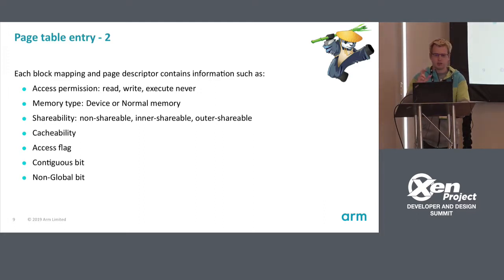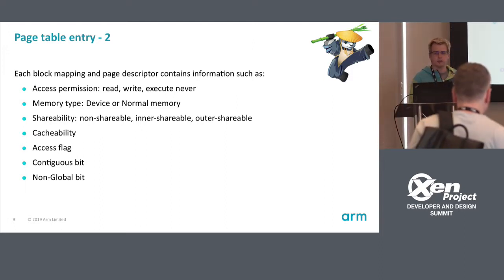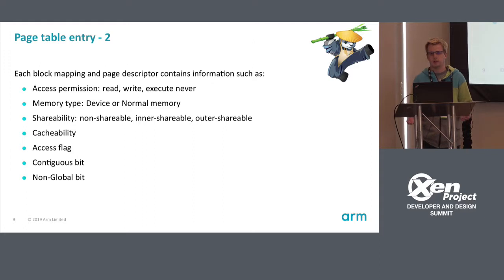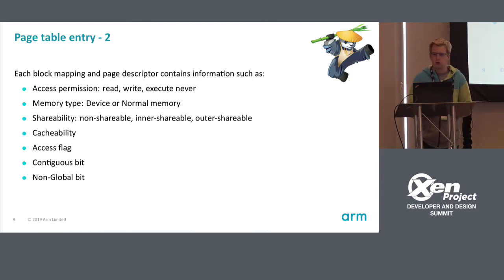Each page table entry describes how you access memory: access permissions (read, write, execute-never), memory type (device or normal memory), shareability — how it is accessed across the platform with other CPUs or devices — cacheability (cached, non-cached, write-back, etc.), the access flag telling you whether the page has been accessed, the contiguous bit, and the non-global bit. I'll get to those later.